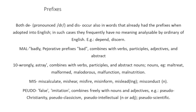The next prefix is 'mal-,' which means badly or wrongly. It combines with verbs, participles, adjectives, and abstract nouns. For example: 'maltreat,' 'malform,' 'malodorous,' 'malfunction,' 'malnutrition.' Next, 'mis-': 'miscalculate,' 'mishear,' 'misfire,' 'misinform,' 'mislead,' 'misconduct' — most of them are nouns. Then 'pseudo-' means false or imitation, combined freely with nouns and adjectives, for example 'pseudo-Christianity,' 'pseudo-classicism,' 'pseudo-intellectual,' or the adjective 'pseudo-scientific.'